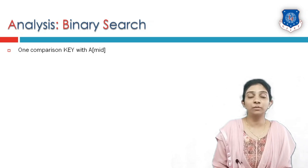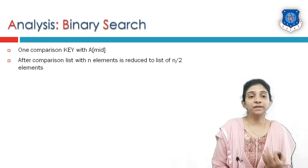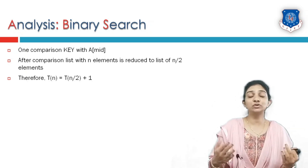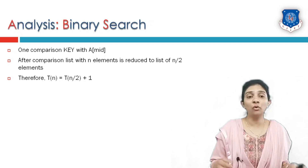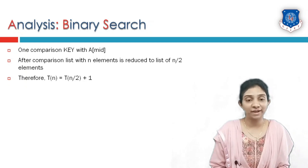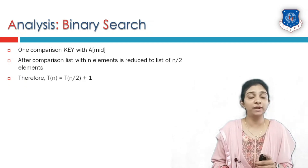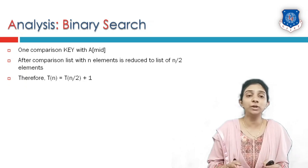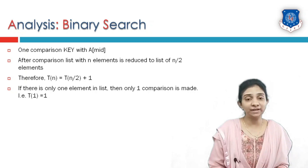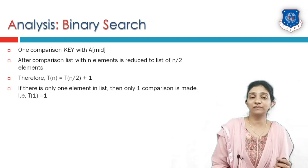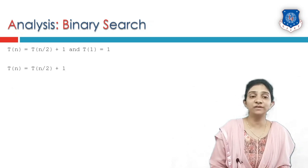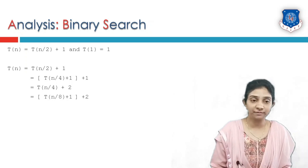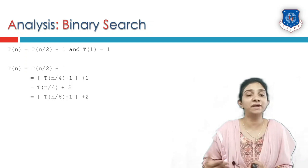Now let us analyze the running complexity of binary search. There is only one comparison with the key element, and after that comparison our list is reduced from n to n/2 in size. To search a list of n, we go into either the first half or the second half, giving T(n) = T(n/2) + 1, where the +1 represents the comparison of key with mid. The base case is T(1) = 1. We solve this recurrence using the substitution method: substituting T(n/2) with T(n/4) + 1, and continuing to get a generalized term T(n/2^k) + k.